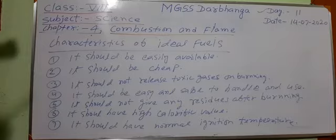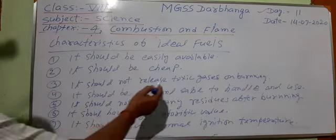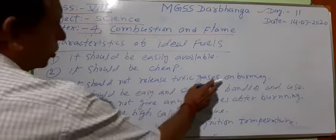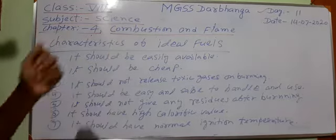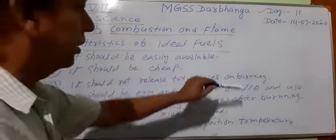If a fuel is very good but very costly, then no general person can use it and it is not an ideal fuel. Third, it should not release toxic gases on burning. When some fuels burn, they release different types of gases and some may be toxic. So to be an ideal fuel, it should not release toxic gases on burning. Even if a fuel is easily available and cheap, if it releases toxic gases, it is not an ideal fuel.